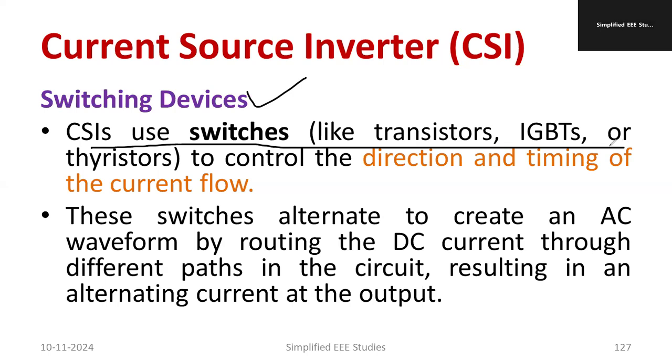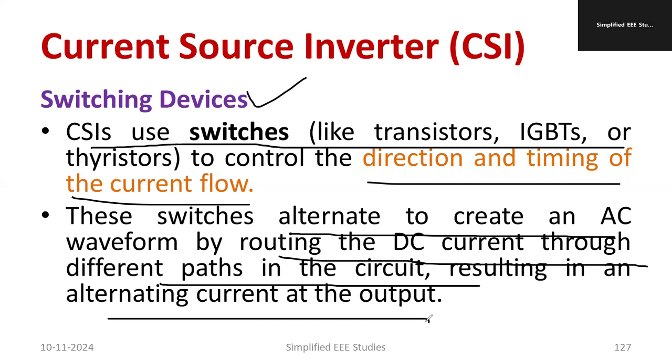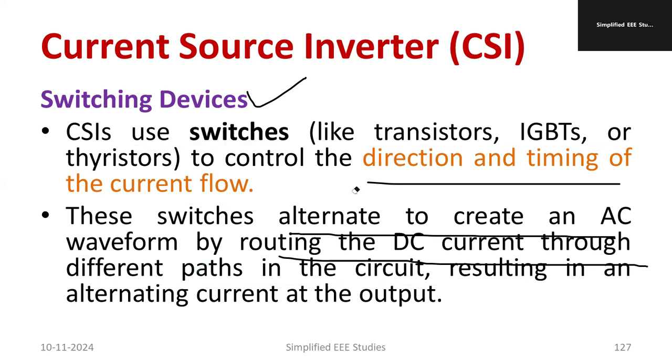While we are talking about the switching devices, CSI uses switches like transistors, especially MOSFET and IGBT. These are mainly used for controlling the direction of current flow and timing. These switches alternate to create AC waveform by routing the DC current through different paths in the circuit, resulting in alternating current at output.